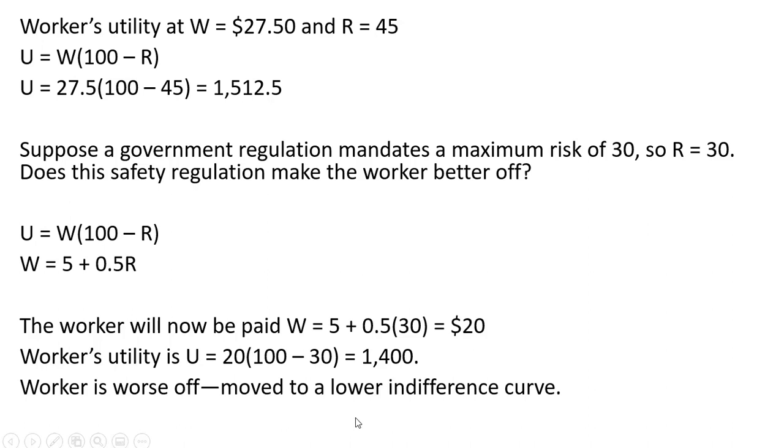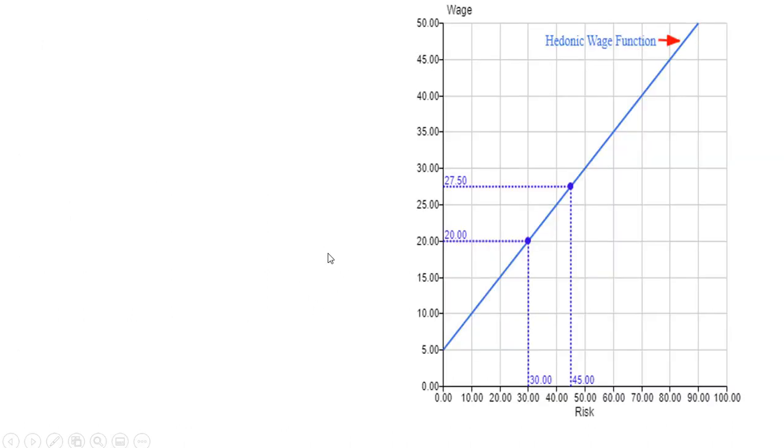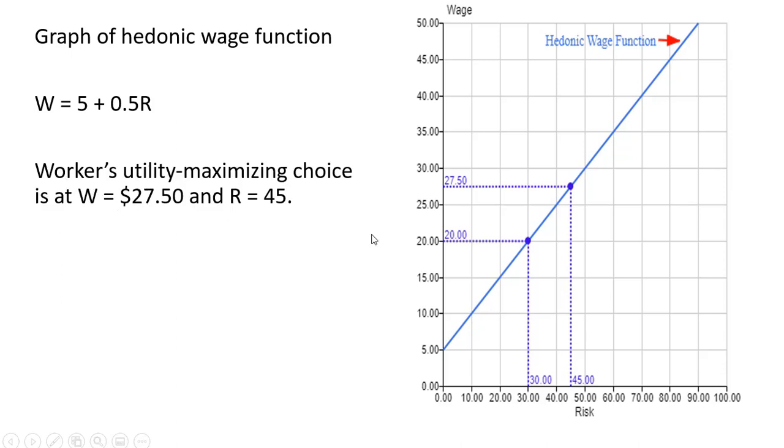This worker would be moved to a lower indifference curve. Let's graph the hedonic wage function. Here's a graph of it on the right. Here's the equation that describes the hedonic wage function—a vertical intercept of 5 and a slope of one half. I located here the worker's utility maximizing choice at $27.50 and R equals 45.